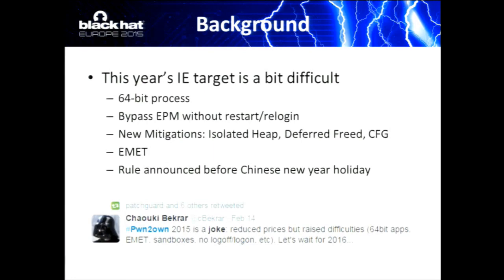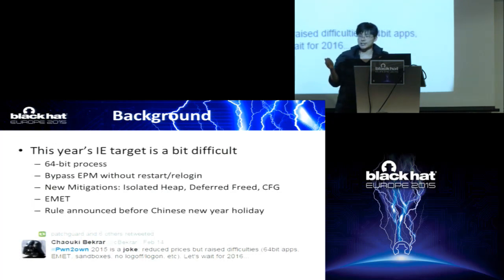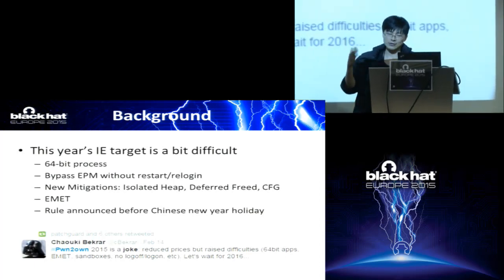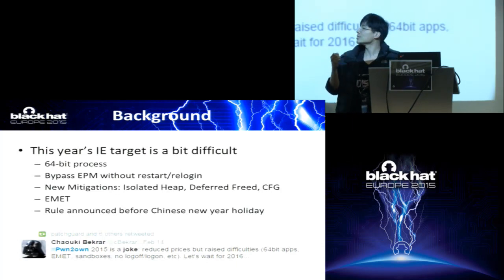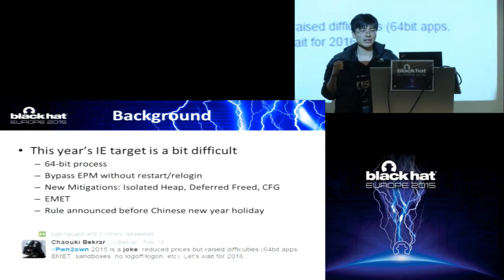In the previous year Microsoft had added many exploit mitigations such as the isolated heap and the deferred free, and these mitigations are very efficient and they cured many useful bugs which could originally be used. As Pwn2Own CEO Shao-Ki Becker said, this year's Pwn2Own is a joke — reduced the price, but the difficulty increased very much. This year's price for IE is $65,000 and last year was $100,000, but this year is much more difficult than last year.